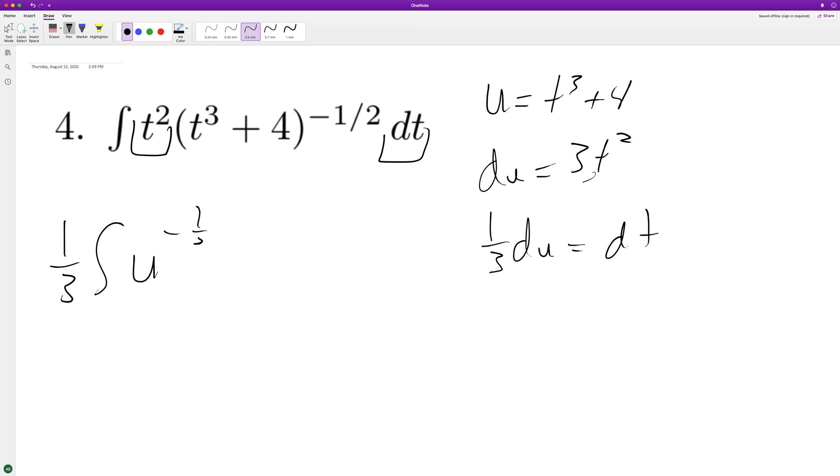Integrating u to the negative one half, we get negative half plus one, which equals one half. So we end up with two thirds u to the one half plus C, which becomes two thirds square root...